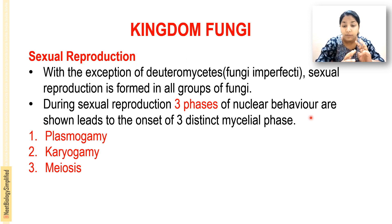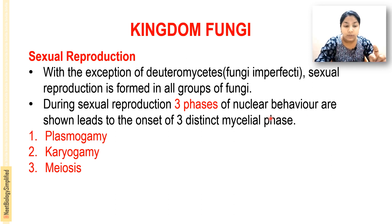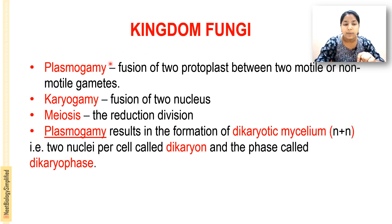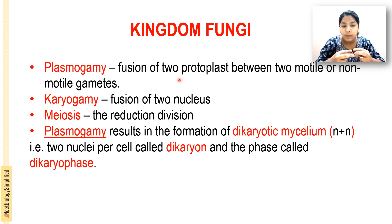The three phases of nuclear behavior that lead to three distinct mycelial phases are: plasmogamy, karyogamy, and meiosis. Plasmogamy is the fusion of two protoplasts — the fusion between two motile or non-motile gametes.